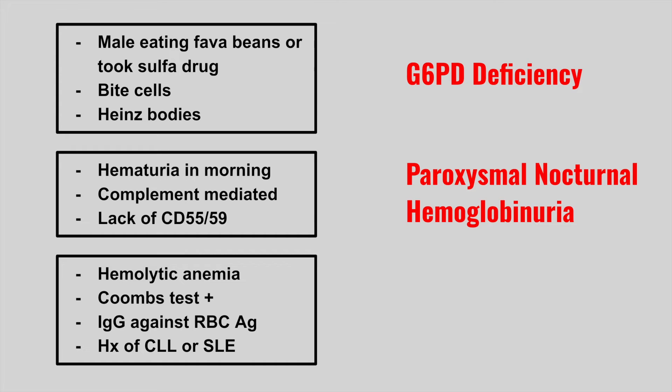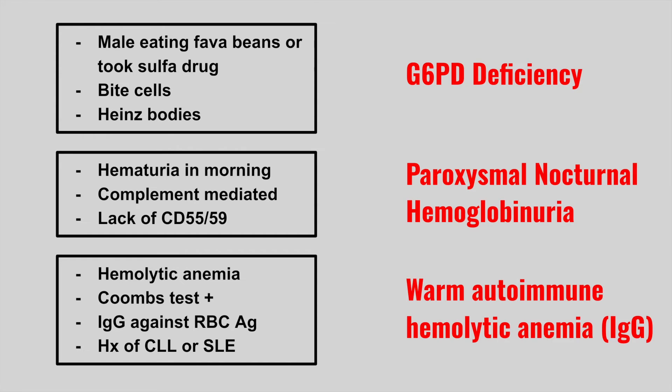Next, we're going to have a patient with hemolytic anemia, a positive Coombs test, IgG against the red blood cell antigen, and a history of CLL or SLE. This is warm autoimmune hemolytic anemia. The Coombs test tells us an antibody is causing the hemolysis. It's very common in CLL — the one with smudge cells — and in SLE, which presents with malar rash and joint pain.